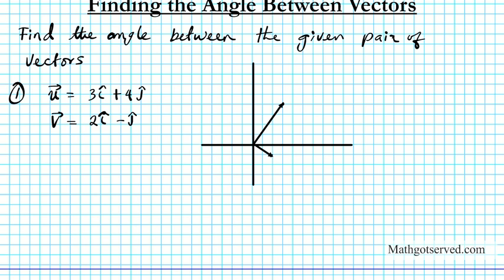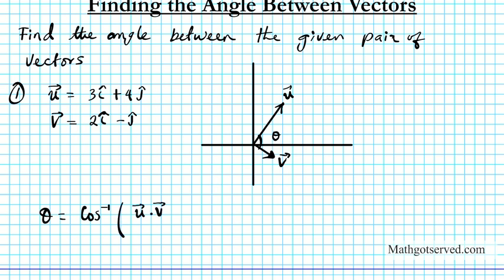What the question is asking is: what is the angle theta between these two vectors? This is vector u and this is vector v. We're going to use the dot product formula to determine this. The formula for the angle theta between two vectors is given by the inverse cosine of the dot product of u and v, divided by the magnitude of u times the magnitude of v.